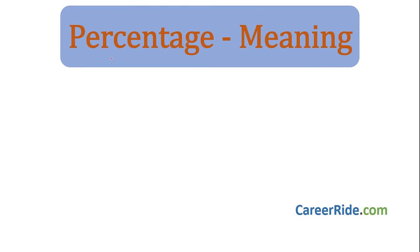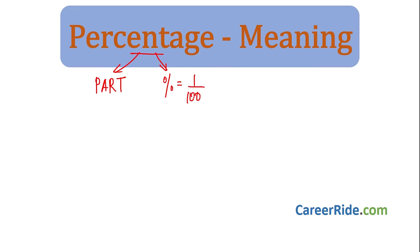First, let us understand what we mean by percentage. Percentage has only 2 simple meanings. One is percentage means part — that means a part of something. And percentage has a symbol which means divide by 100. These are the only 2 meanings of percentage that we need to know to solve the sums.